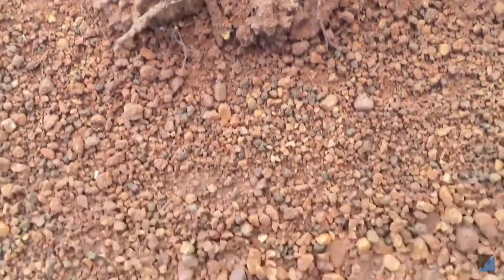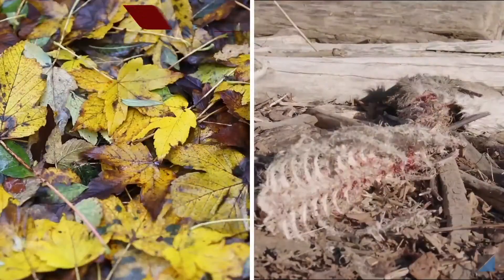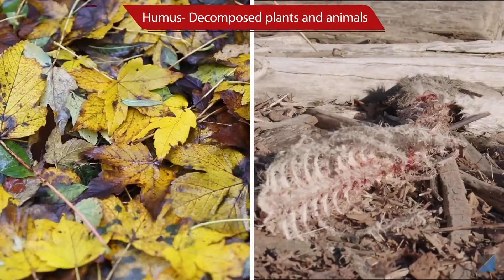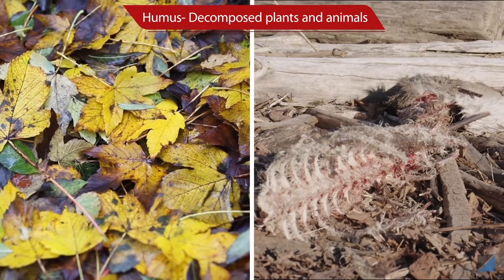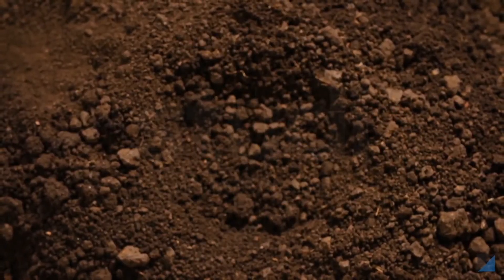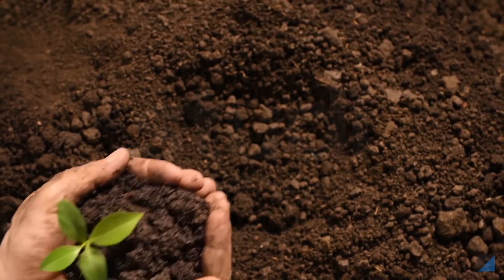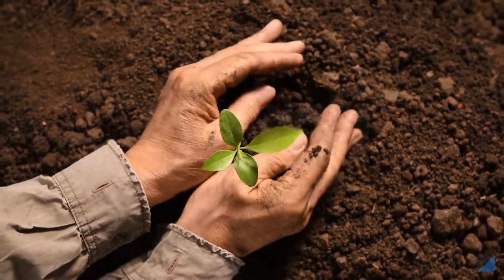But wait! The soil is not made up only of broken rock particles. Soil is also made up of humus, which is decomposed plants and animals. The decomposed organic material adds nutrients to the soil and makes it fertile.